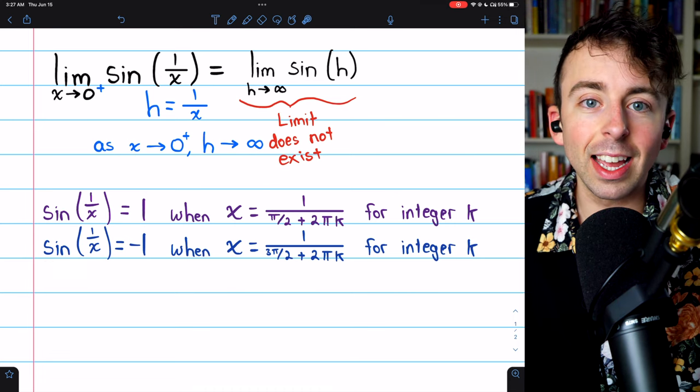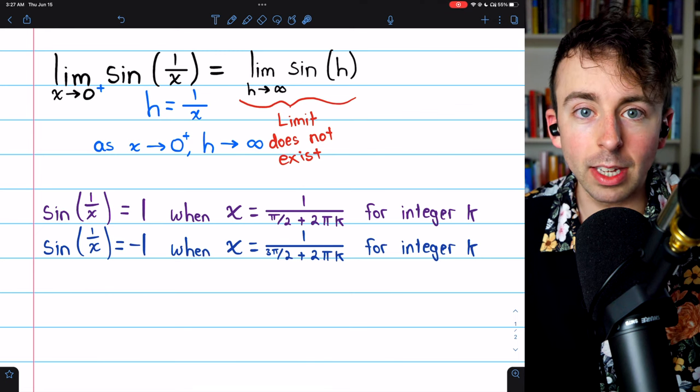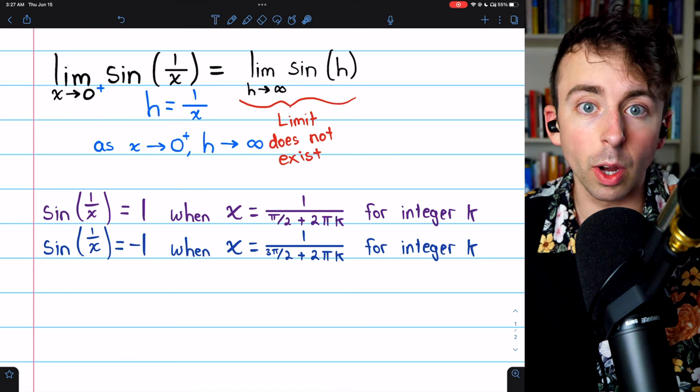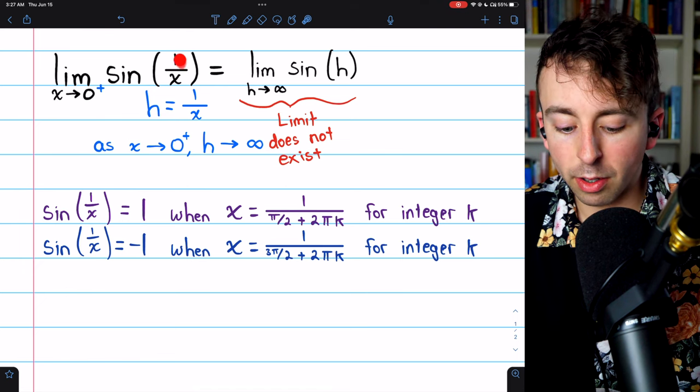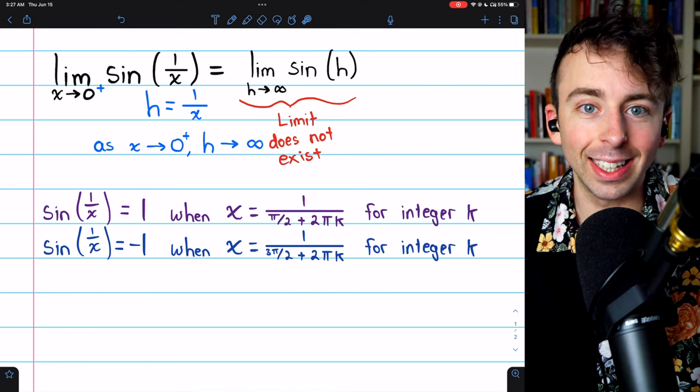In this way, we can clearly see that as x approaches 0, it will at infinitely many times equal 1 and at infinitely many times equal negative 1. So certainly, the values of this function as x approaches 0 will be oscillating and we're not going to have a limit.